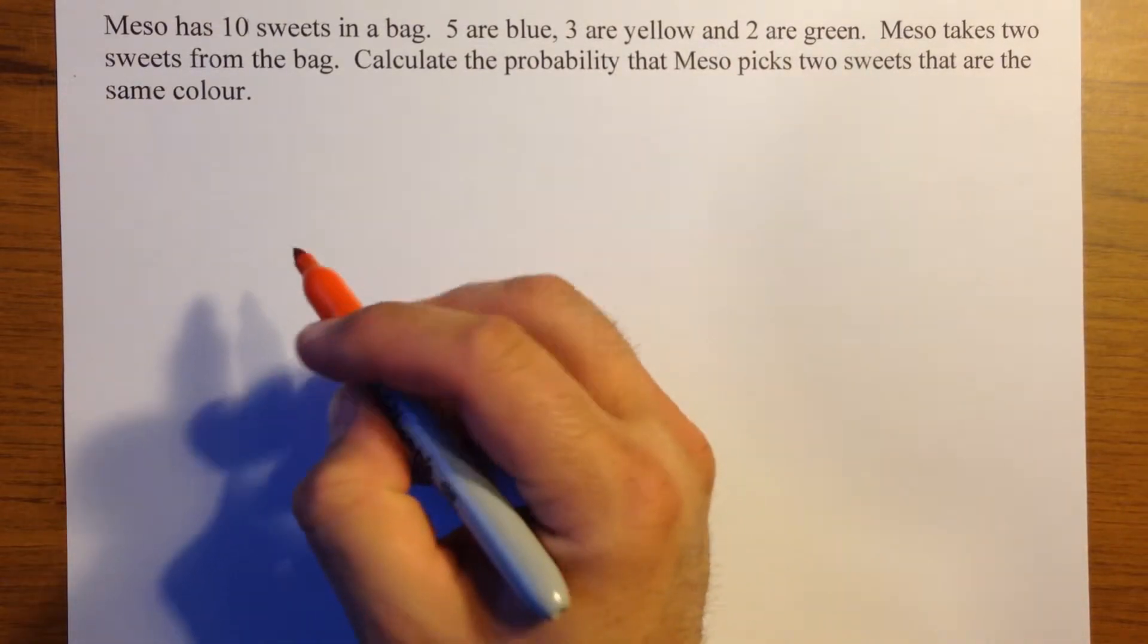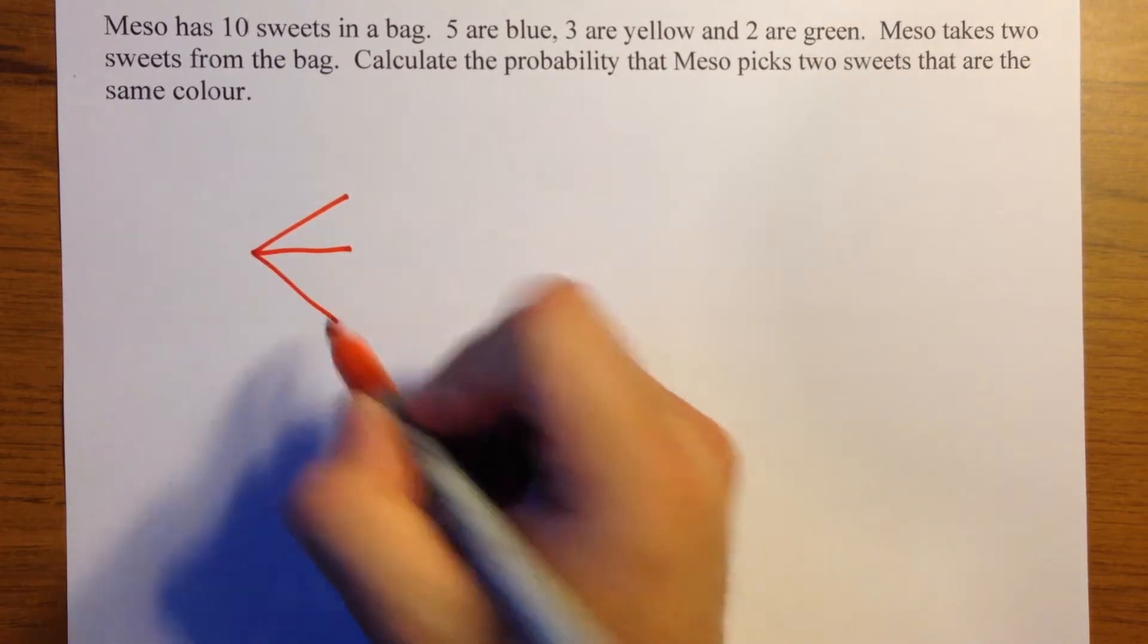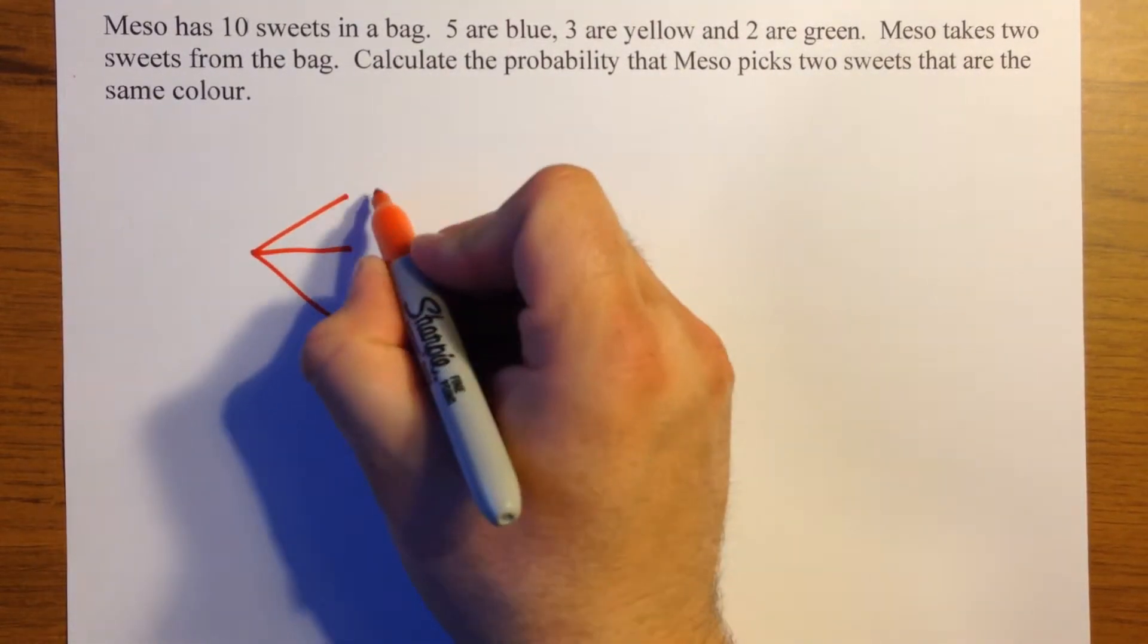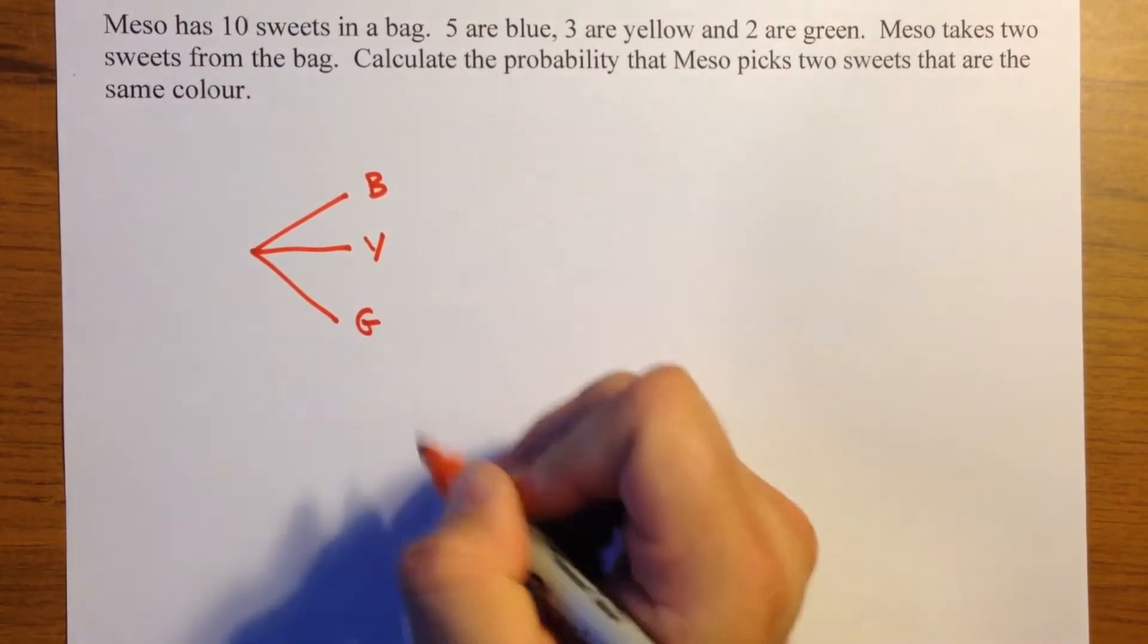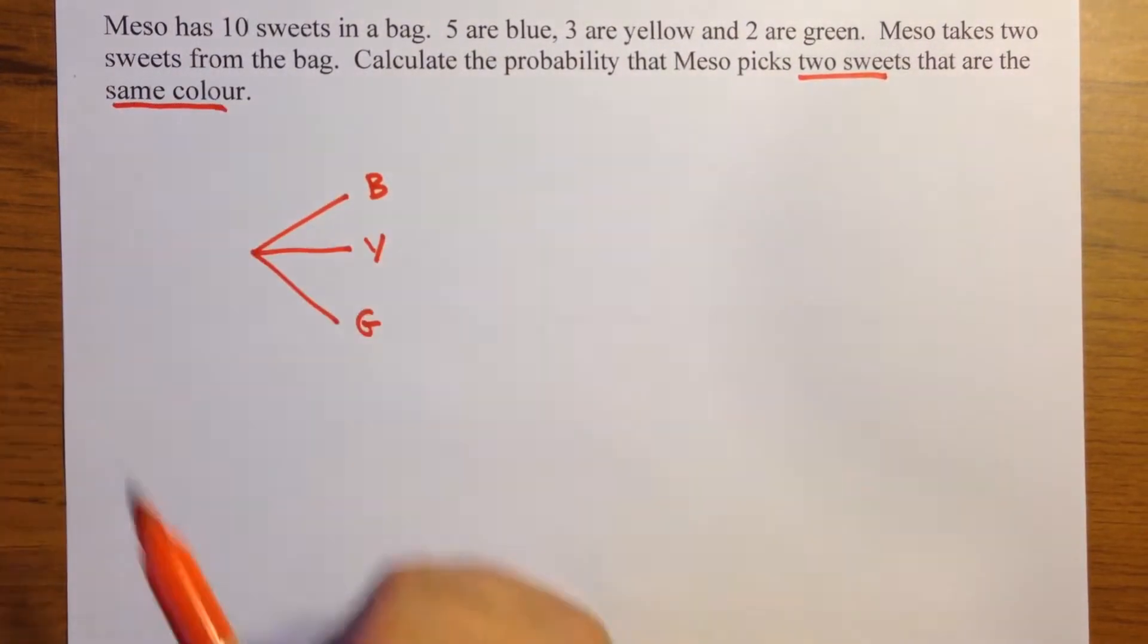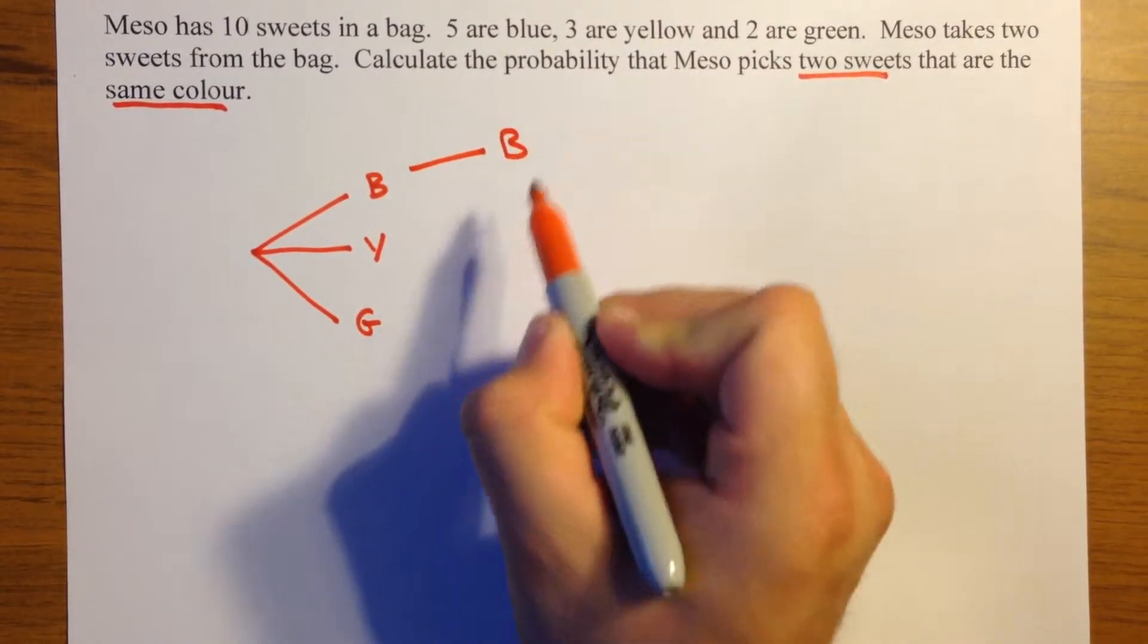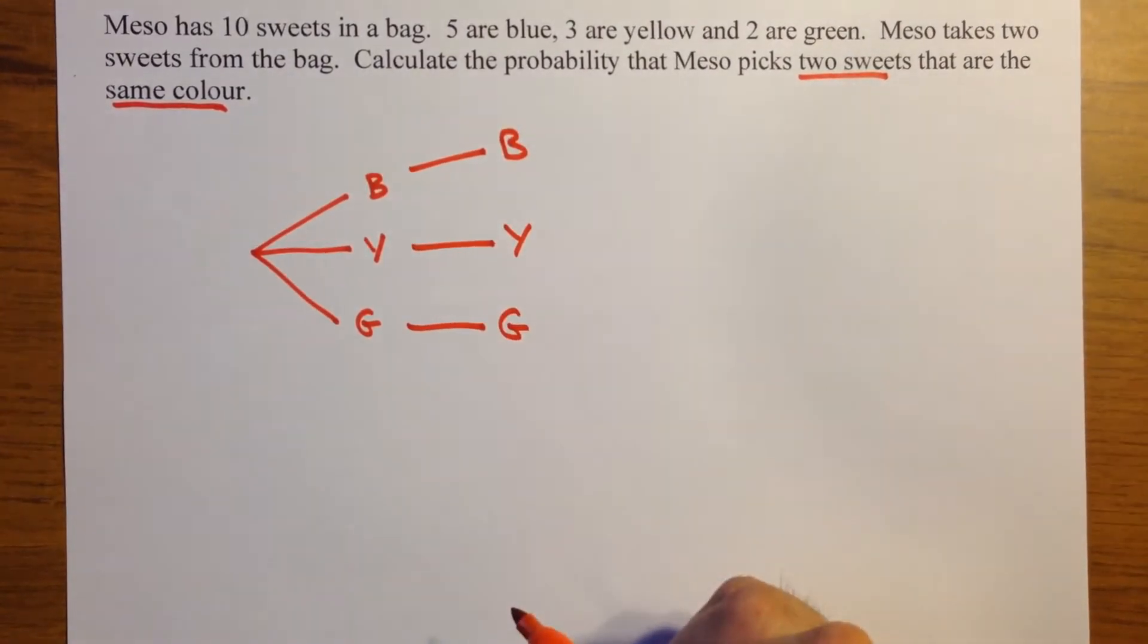So, in order for the tree diagram to not get too complicated, we're only going to draw the branches that we're interested in. For the first sweet it's either going to be blue, yellow or green. And because we only want the probability of the two sweets are the same colour, I'm not going to draw all the branches on, I'm just going to draw on the blue branch, the yellow branch and the green branch.